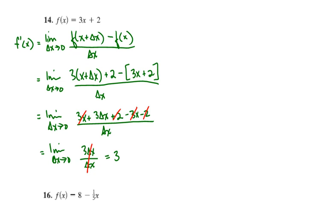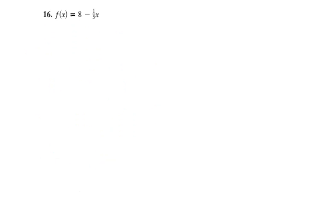And 3 is the slope of the tangent line to the curve 3x plus 2 at every x value along that curve. Moving on to the next one: here we have f of x is equal to 8 minus 1/5 x. Again, it's a straight line, so we're expecting that our result is going to come out to be negative 1/5.